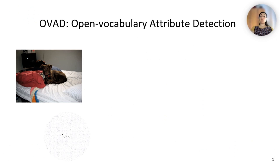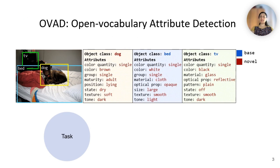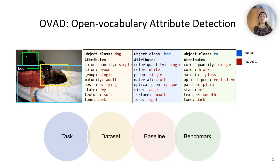In our work, we introduce the Open Vocabulary Attribute Detection task, where the objective is to detect all objects and predict their associated attributes. We propose the OVAD dataset, a clean and densely annotated evaluation dataset designed for Open Vocabulary Attribute Detection. We provide an attribute-focused baseline method for the OVAD task, which outperforms existing Open Vocabulary models that only aim for object classes. Finally, we benchmark the zero-shot performance of several open-source foundation models on visual attributes, revealing the challenges they encounter.